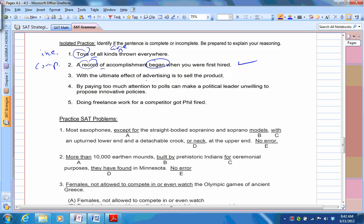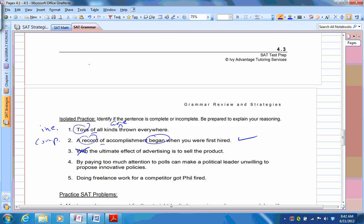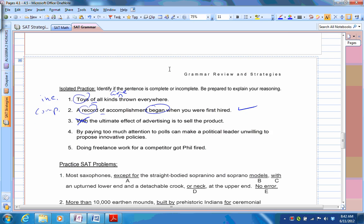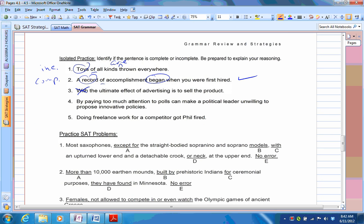With the ultimate effect of advertising to sell the product. The word with. If you look back up here, with those words like after, although, because, now that, since, though, until, when, while. Probably with, there's no, we should have added here as well. Some of those transition words can cause fragments. So just say the ultimate effect of advertising is to sell the product. So now it's an independent clause, it stands on its own by dropping the word with.